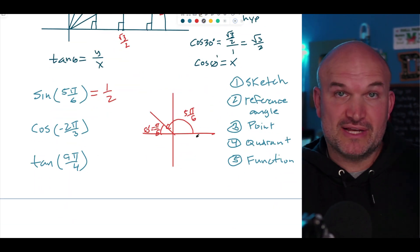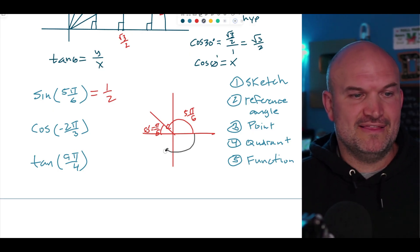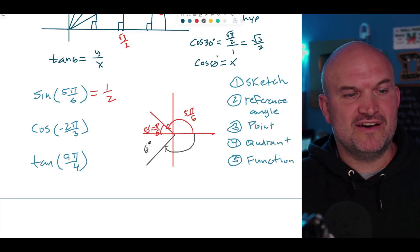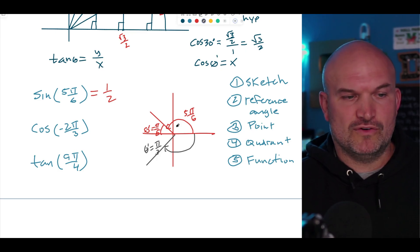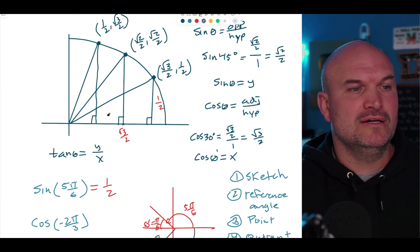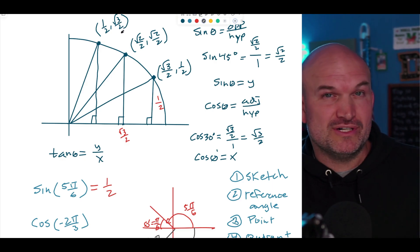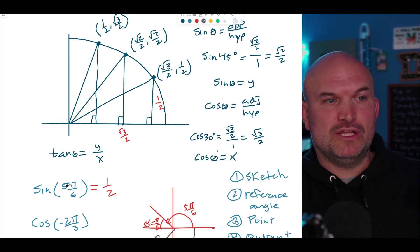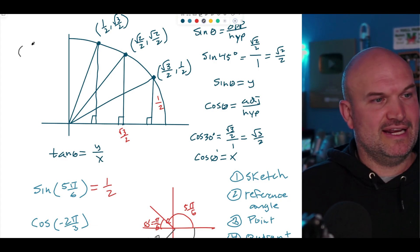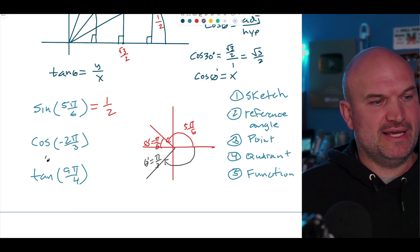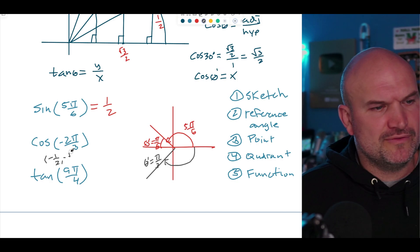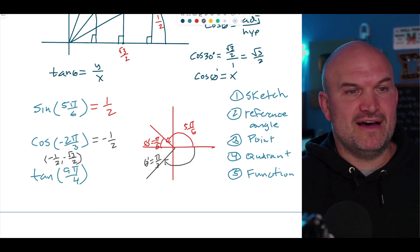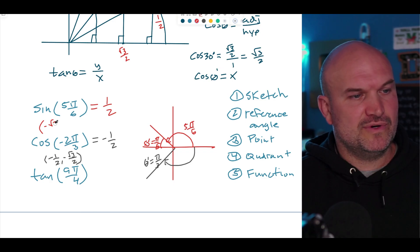Next: cosine of negative 2π/3. This angle goes in the negative direction. The reference angle is π/3, since 3π/3 would be π — halfway around the circle. The coordinate point for π/3 is (1/2, √3/2). This lands in the third quadrant, so both x and y are negative. Since cosine represents the x-coordinate, the answer is negative 1/2. The full coordinate point is (-1/2, -√3/2).